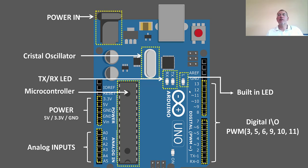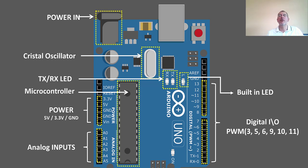The next one is a built-in LED. It will let you verify some projects. There's an example that comes with Arduino that we'll be using this LED for. It's a built-in LED, and it uses pin number 13 — it's internally connected to pin number 13.